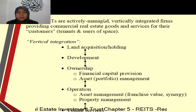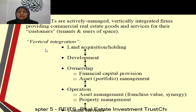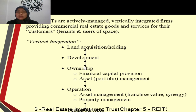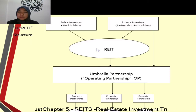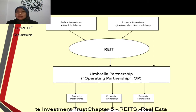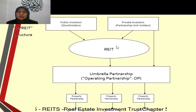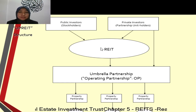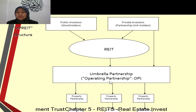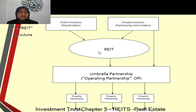Large REITs are actively managed — vertically integrated firms providing commercial real estate goods and services for customers, tenants, and users of space. Vertical integration includes land acquisitions, developments, ownership, capital, operations, and tenants. The REIT structure — basically it comes from public investors who become stockholders, or private investors and partnership unit holders — they collect a REIT investment fund. The umbrella partnership — the operating partnership — will invest into a portfolio of properties: property X, Y, Z — many types of property. They do a partnership using the investment fund received from investors.